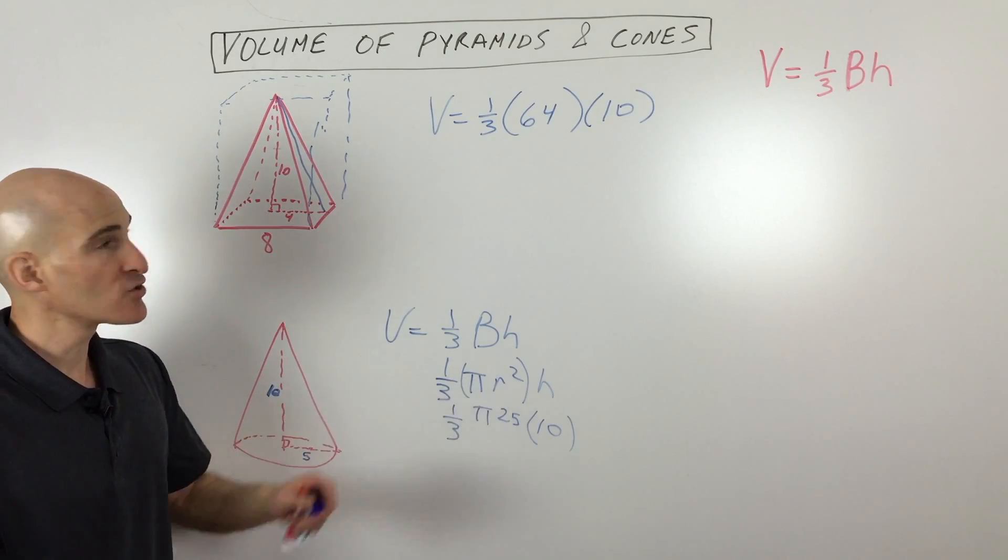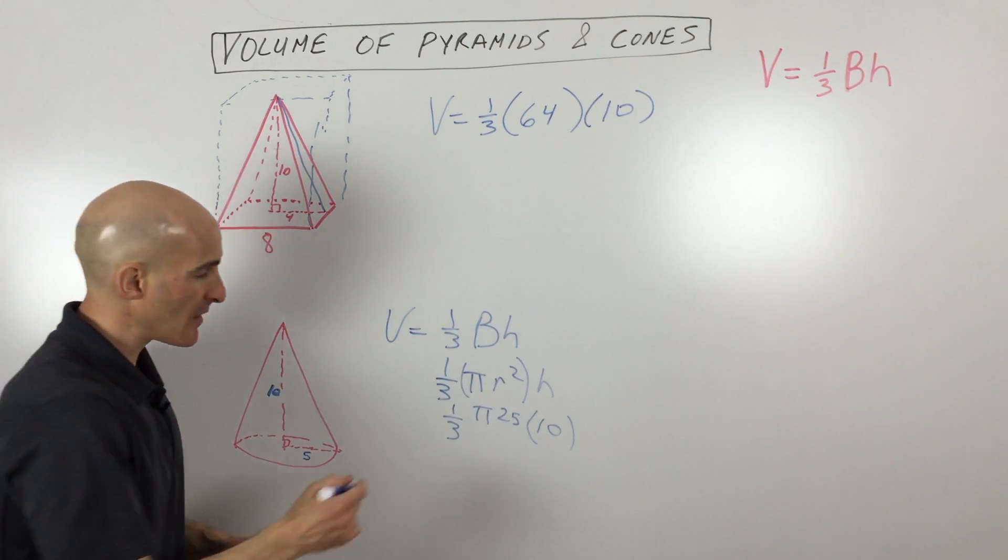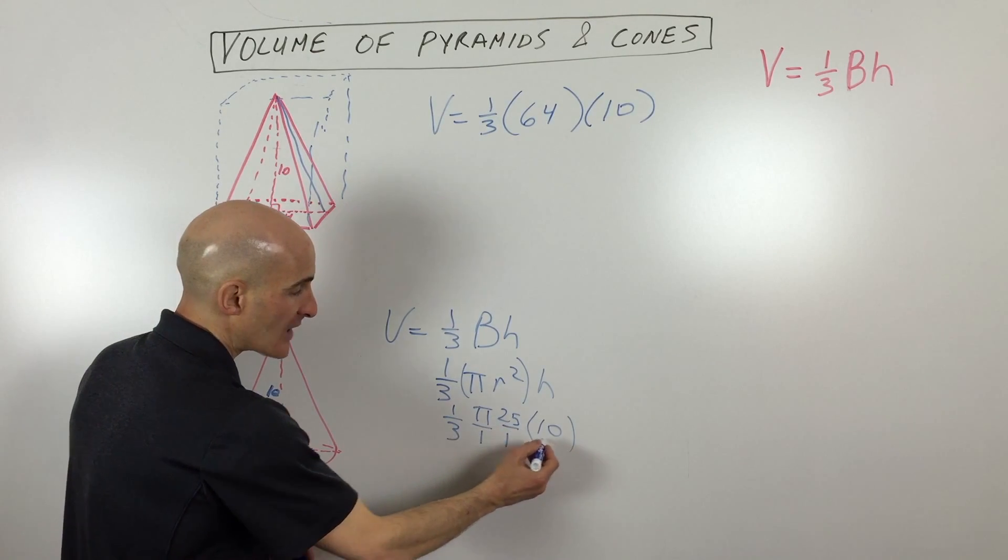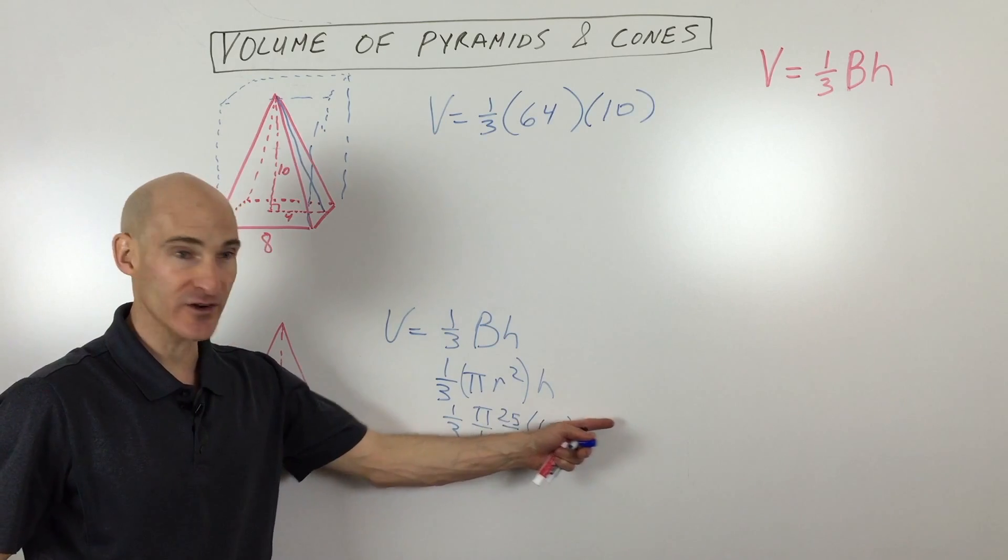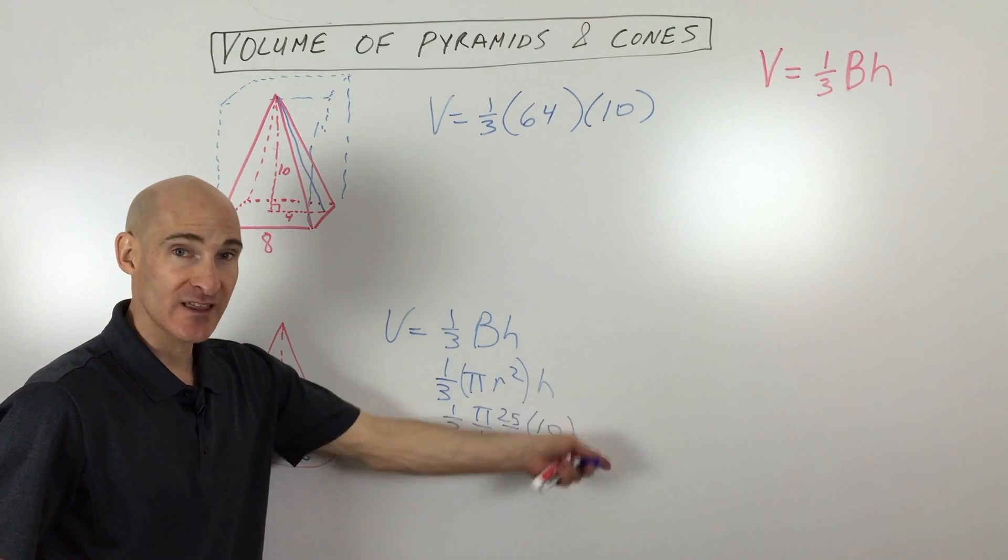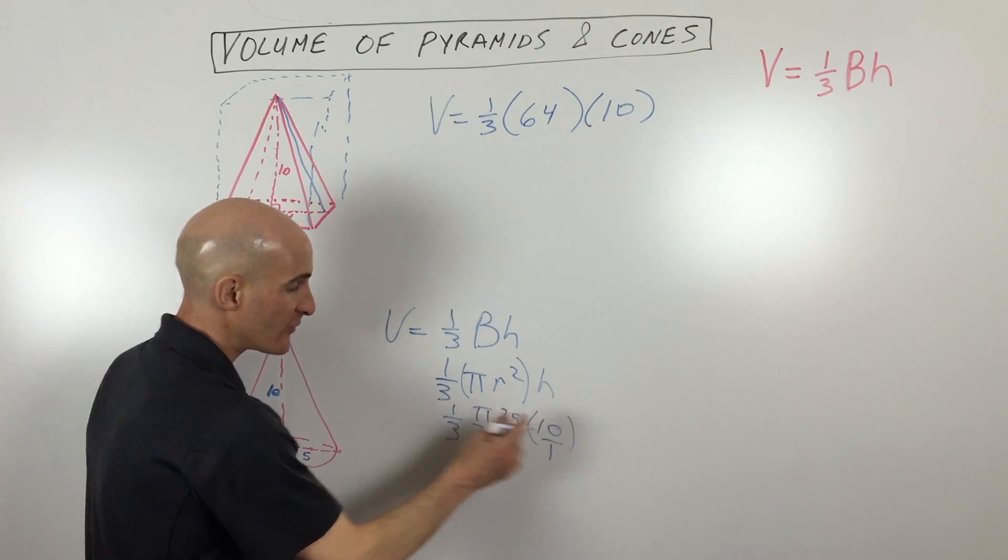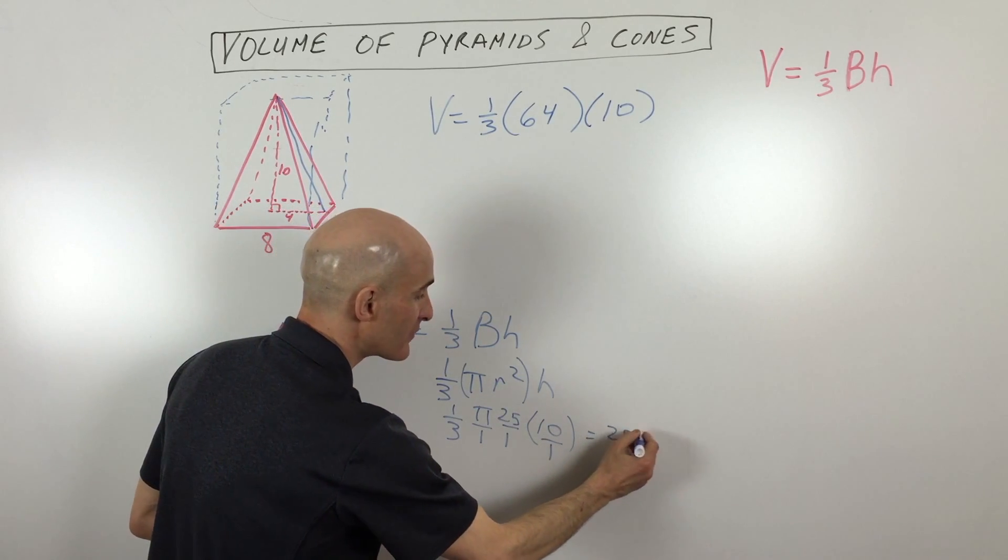Now, just a quick note. Sometimes students get a little bit tripped up on the fractions. You can think of any whole number as a fraction by putting it over one. So you would multiply all the numerators, all the denominators, and then you would divide. So in this case, that's 25 times 10 is 250 times pi. So that's 250 pi.